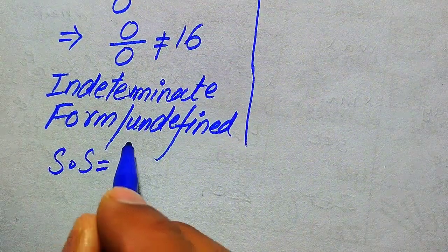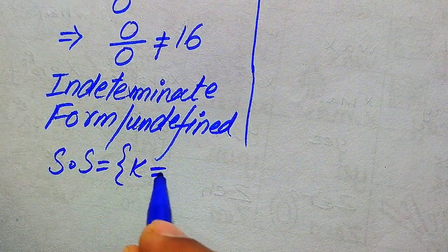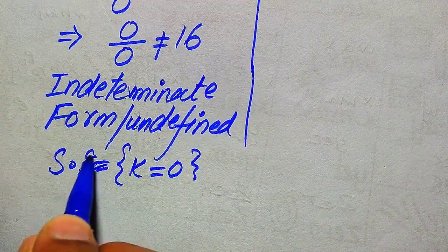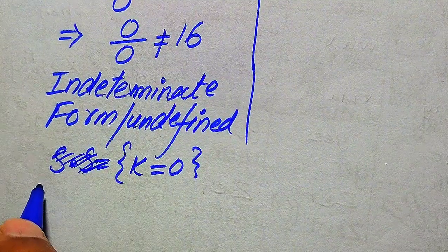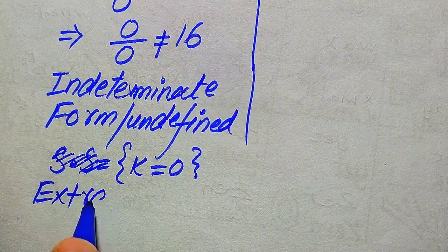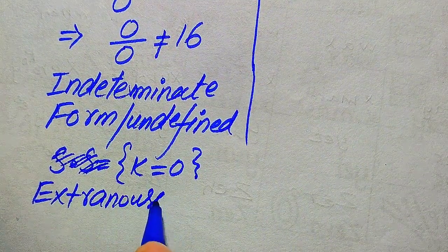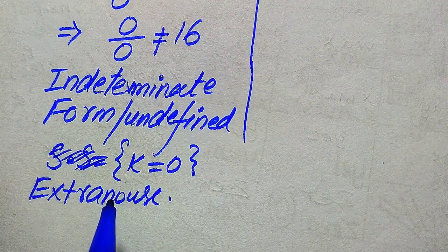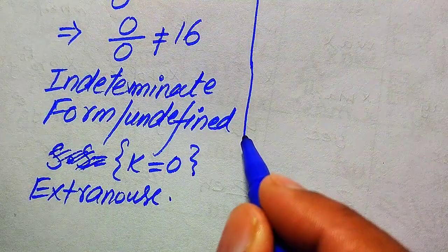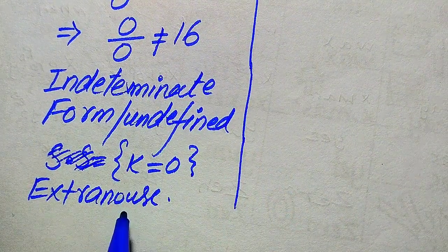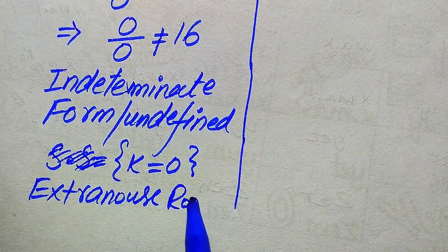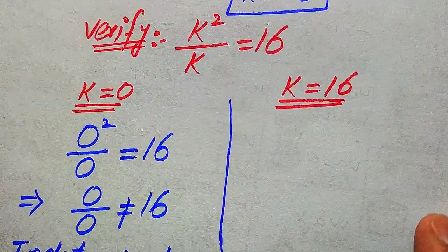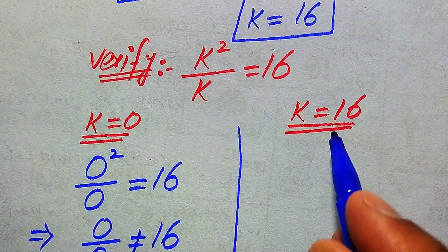Since both sides are not equal, the value k equals 0 does not satisfy the given equation. Therefore, k equals 0 is called an extraneous root. A root which does not satisfy the given equation is an extraneous root, and roots which do satisfy it form the solution set.